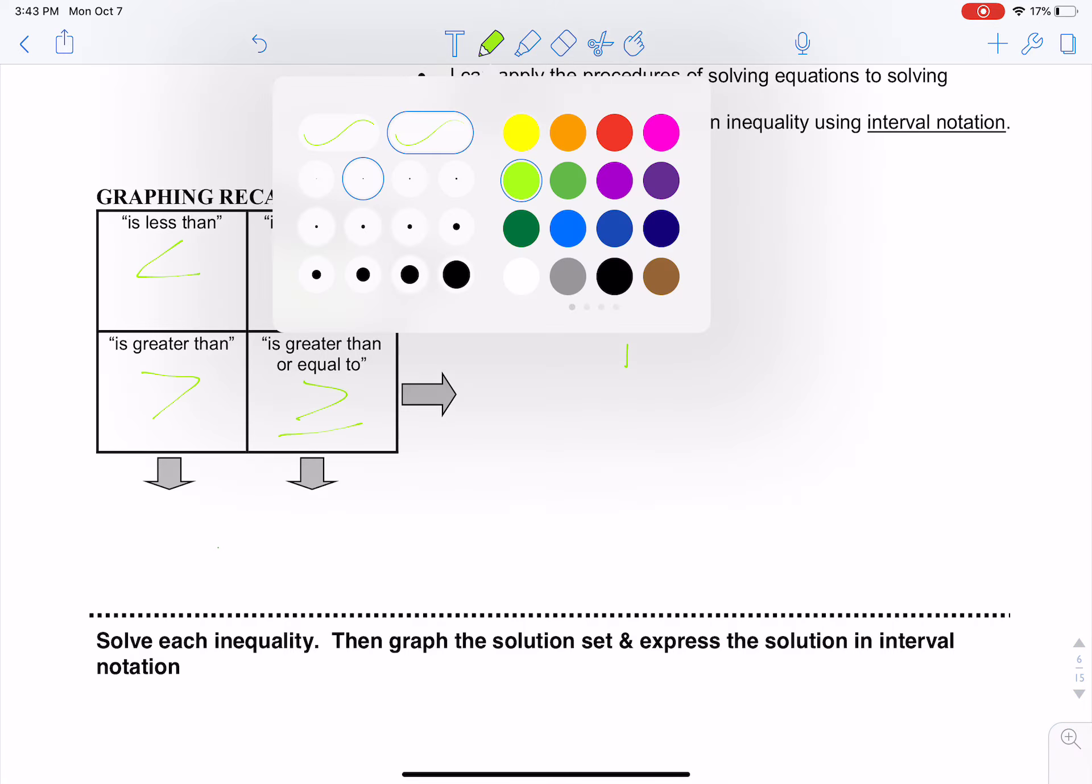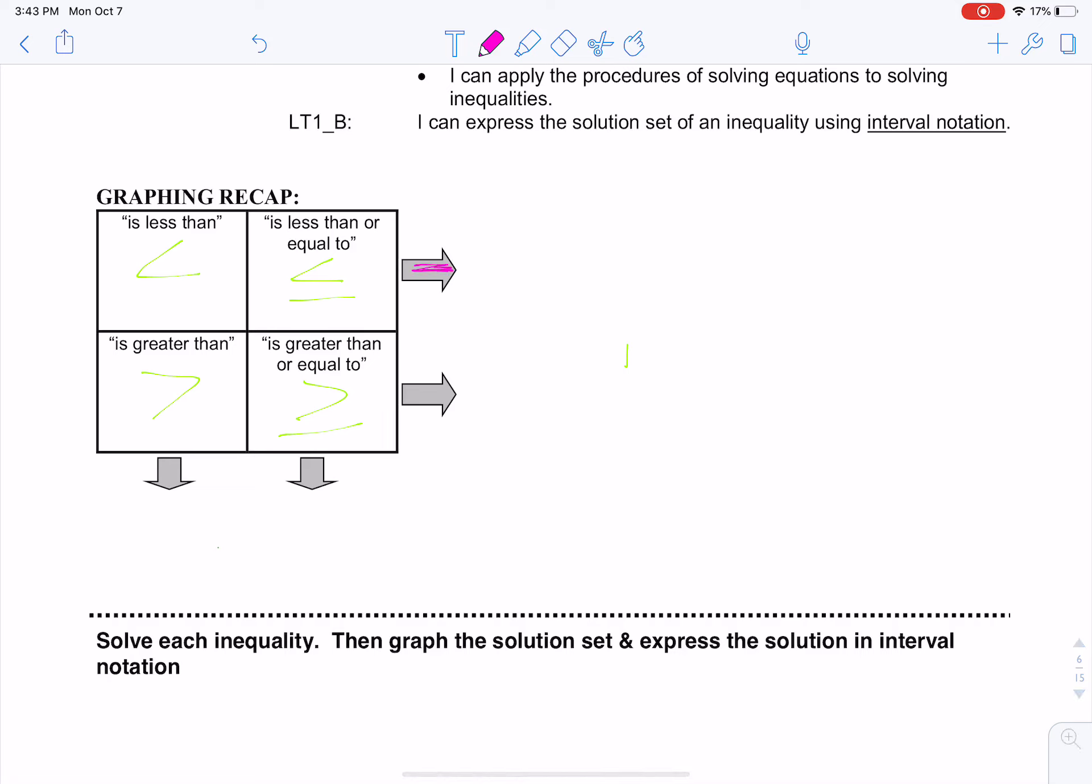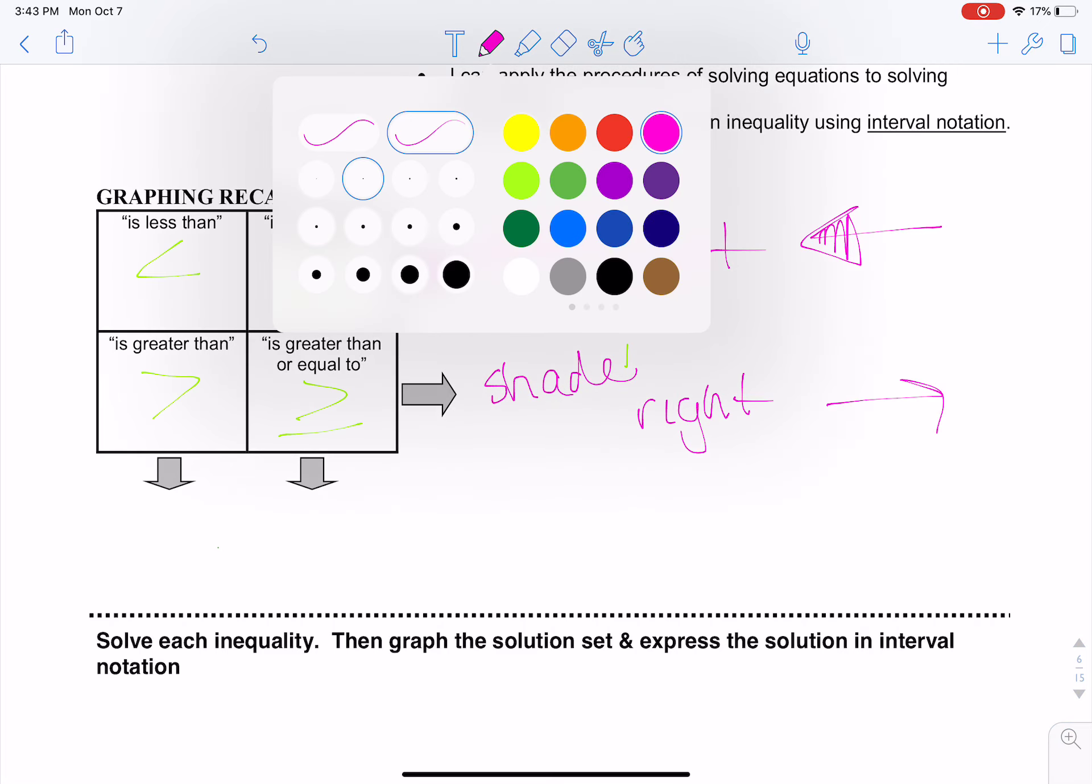Now let's talk about shading. If I have these two symbols here, less than or less than or equal to, I'm going to shade to the left every single time to show that it could be anything on the graph that is less than that number. And then going the opposite way, if it's greater than, greater than or equal to, I'm going to shade to the right to show everything greater than on the graph.